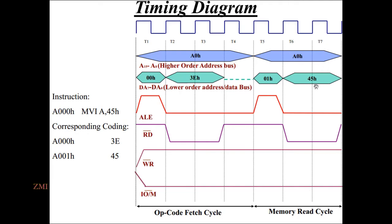T6 is the same as T7. The second time cycle: T1 and T2 are the same as T3 and T4. T5, T6, and T7 correspond to the memory read cycle.